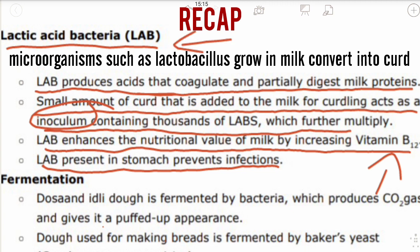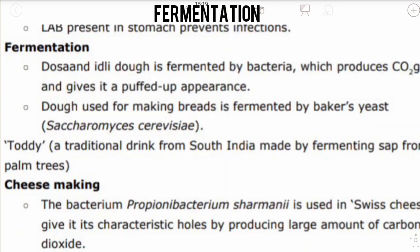Quick recap: microbes such as Lactobacillus, commonly called lactic acid bacteria, grow in milk and convert it into curd. During growth, bacteria produce lactic acids that coagulate and partially digest milk proteins. A small amount of curd as a starter is added to milk at suitable temperature, where LAB multiply and convert milk into curd, improving nutritional quality by increasing vitamin B12 and preventing stomach infections.